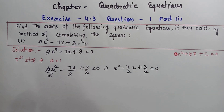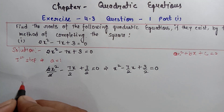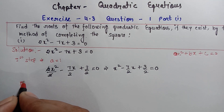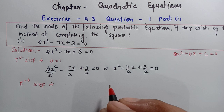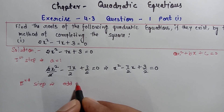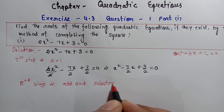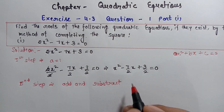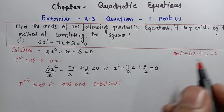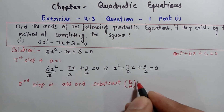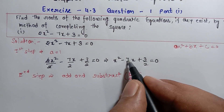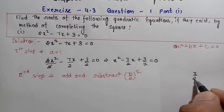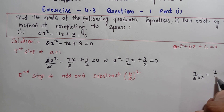First step बहुत easy है। Second step में आपको add and subtract करना है — जो x का coefficient है b, उसके half का whole square को add and subtract करना है। यहाँ पर x का coefficient 7 by 2 है। इसका half करेंगे तो 2 से divide करेंगे, यानि कि 7 by 4।